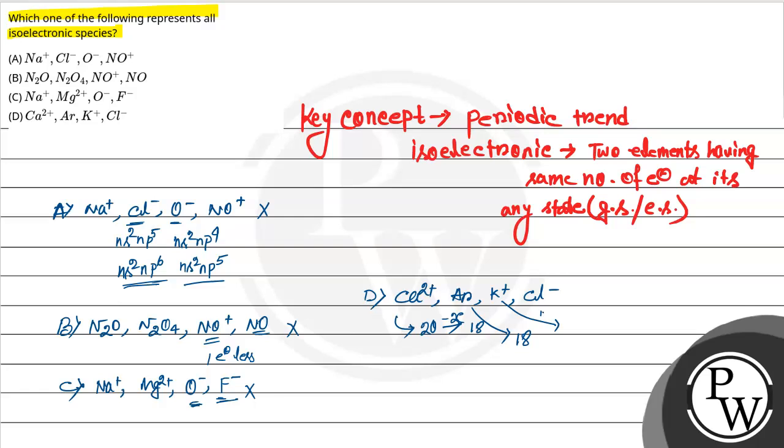Argon obviously noble gas is 18 electrons. Potassium is 19 electrons and 1 electron removed is +1, so 18 electrons. Chlorine is 17 electrons, add 1 electron that is 18 electrons.